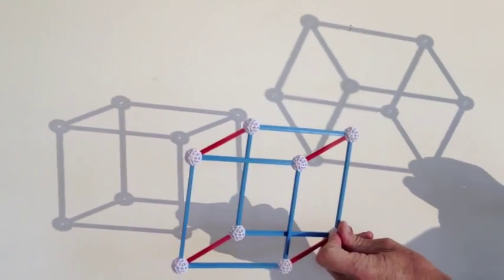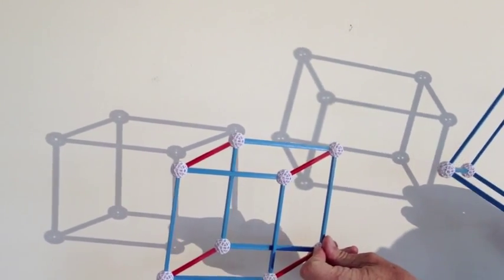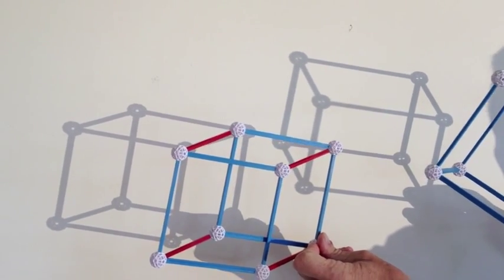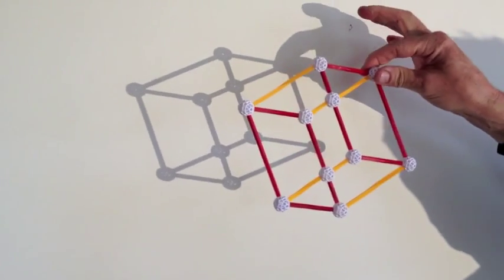It looks very similar to the shadow that this three-dimensional cube casts. It's not quite perfect, because I made it up of two squares connected by red lines.